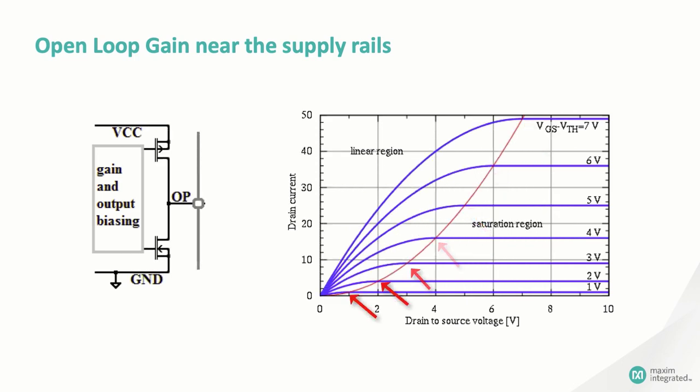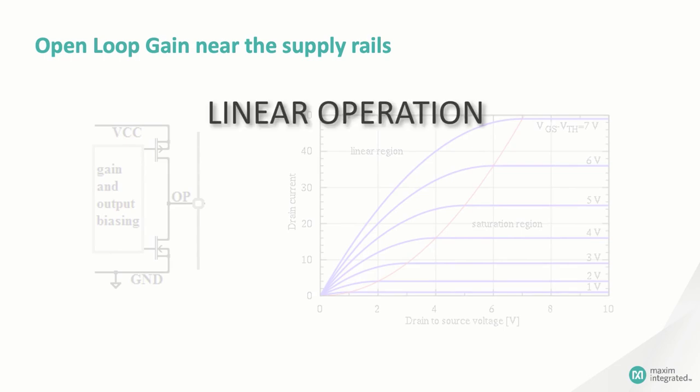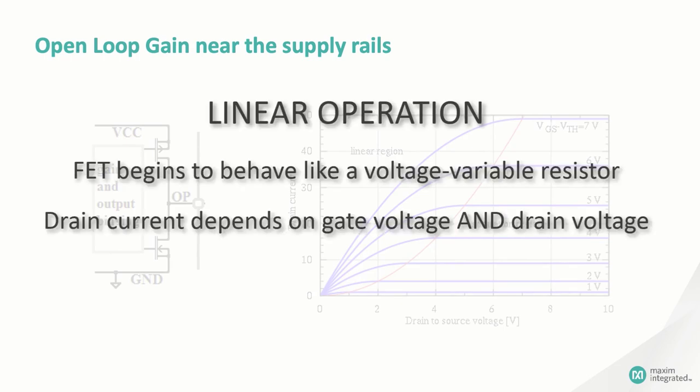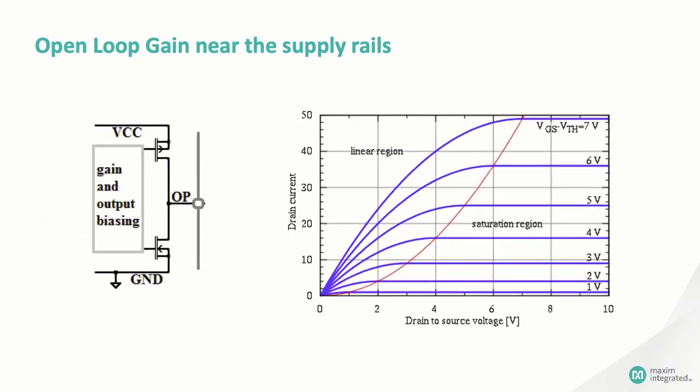But as the gate voltage gets close to the drain voltage, that is, when the output gets close to one of the rails, the MOSFET stops being a constant current source. It starts to slip into the linear region, where changes in drain voltage do affect drain current. The FET begins to behave more like a resistor than a current source, and the change in the current with changes in the gate voltage is reduced. Thus, you get reduced gain and increased phase shift in the signal, and along with an increased phase shift, an increased likelihood of instability. And instability is the worst outcome. If the amplifier begins to oscillate or ring, the performance of the entire system is compromised.